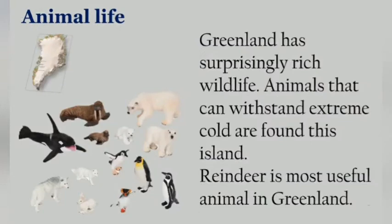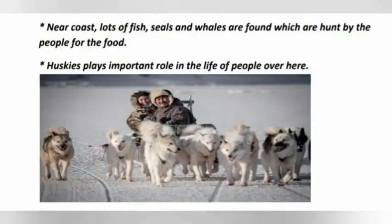Animal life in Greenland: Only those animals that can adapt to the extreme cold live here. Reindeer, polar bear, musk oxen, arctic fox, seal, and huskies are found here. Reindeer is the most useful animal in Greenland. Fish and seabirds are also found. Huskies are wolf-like dogs that play an important role — they are used for hunting and for pulling sledges. A sledge is an ice boat with no wheels. Reindeer and seals are the most useful animals.